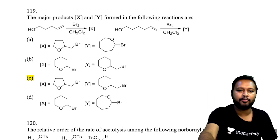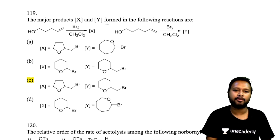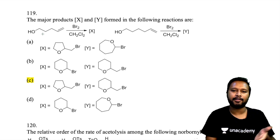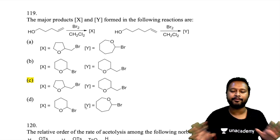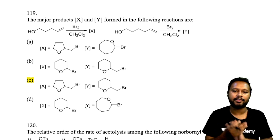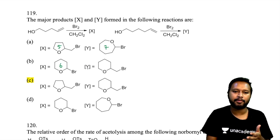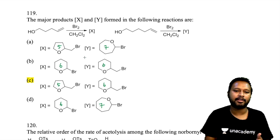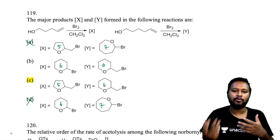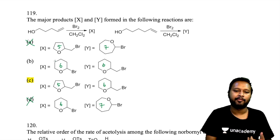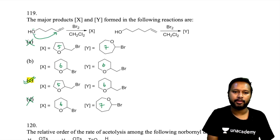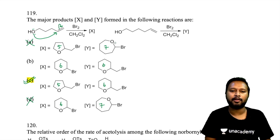Question 119: a cyclic epoxide ring-forming reaction. From the options, 7-membered rings are less stable — cancel options A and D. The most stable products involve 5- and 6-membered rings. Following the mechanism, taking the oxygen and shifting the bond gives a 6-membered ring product. Option C is correct.